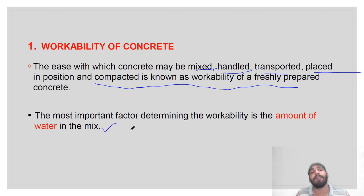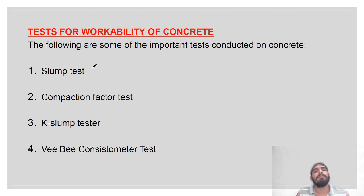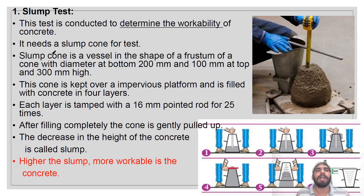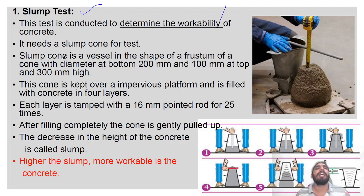Workability can be measured by four tests: the slump test, compaction factor test, Kelley ball slump test, and Vebe consistometer test. In your syllabus, only the slump test and compaction factor test are mentioned. The slump test is conducted to determine the workability of concrete and requires a slump cone.